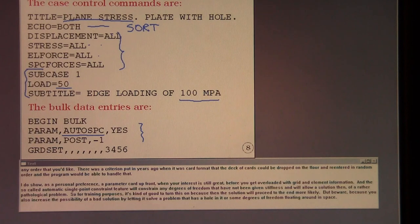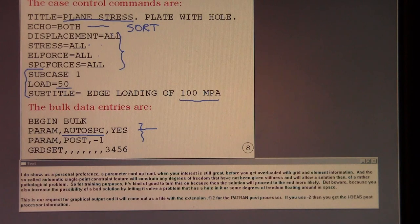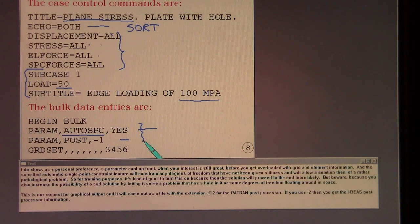And the so-called automatic single point constraint feature will constrain any degrees of freedom that have not been given stiffness and will allow a solution then of a rather pathological problem. So for training purposes it's kind of good to turn this on because then the solution will proceed to the end more likely. But beware because you also increase the possibility of a bad solution by letting it solve a problem that has a hole in it or some degrees of freedom floating around in space.